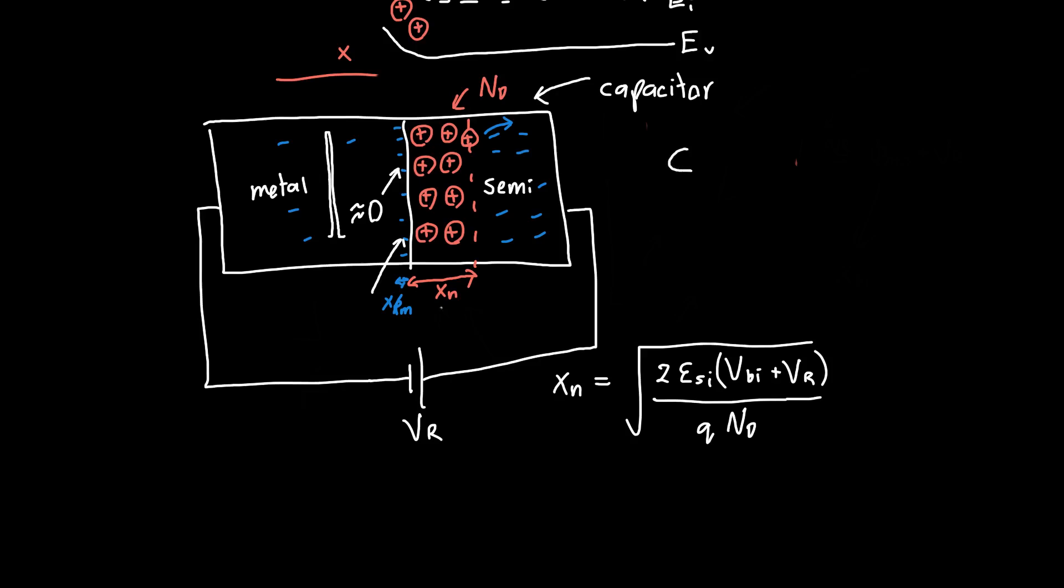We know that the capacitance per unit area of a parallel plate capacitor is just the permittivity of whatever material is in between, divided by the thickness. In this case, the thickness is just the depletion region. From that, you can calculate the capacitance per unit area. You take the permittivity and divide it by the square root term. You'll get Q*Nd times the permittivity, in this case the permittivity of silicon, divided by 2 times Vbi plus Vr. So this is the capacitance per unit area.